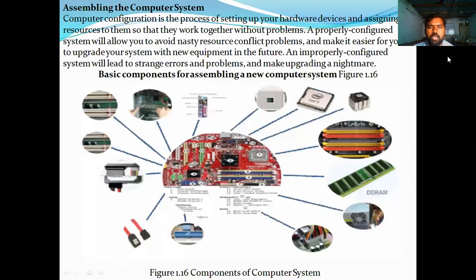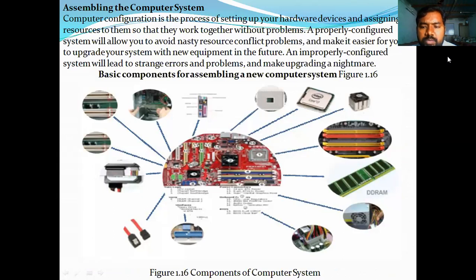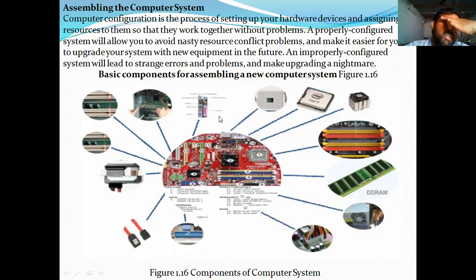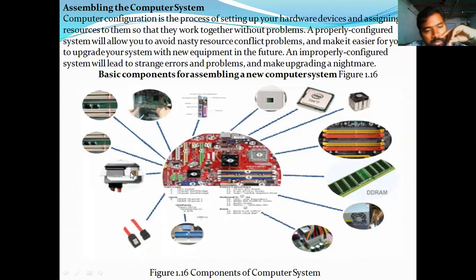Next, we need to assemble the computer system. A common exam question is to write down the basic configuration of the computer system. To assemble the computer system, you will need: RAM, DDR RAM, SMPS, Processor Fan, Processor Chip, Core, Processor Slot, Power Slot, RAM Slot, Graphic Slot, and SATA Pin.